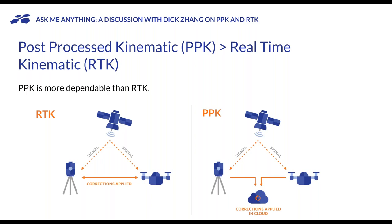There are two main types of GPS correctional technologies: post-process kinematic (PPK) and real-time kinematic (RTK). RTK provides real-time corrections to location data while the survey drone is capturing photos of a site. PPK happens after the data has already been captured and uploaded. Through extensive testing and research, we found that PPK is actually the best route for drone mapping.